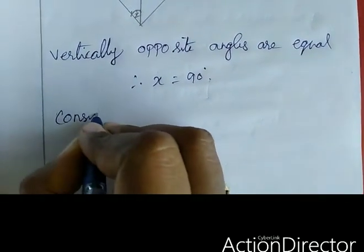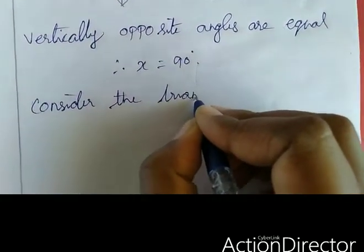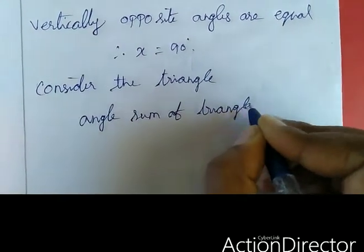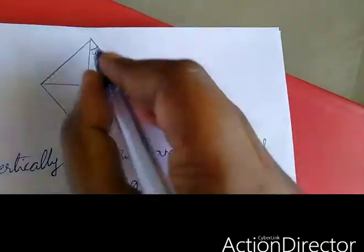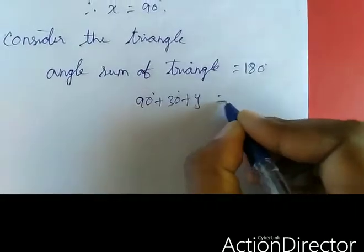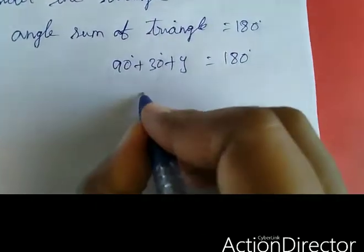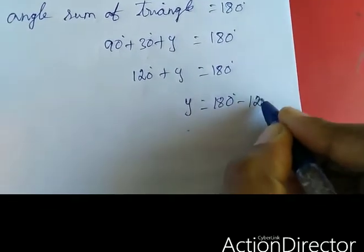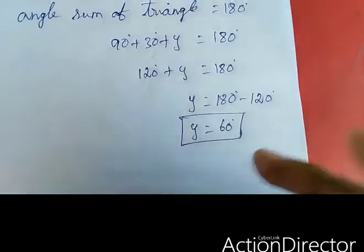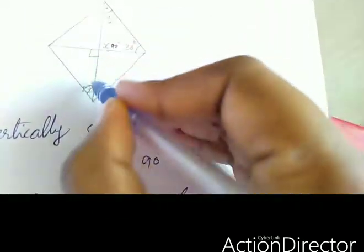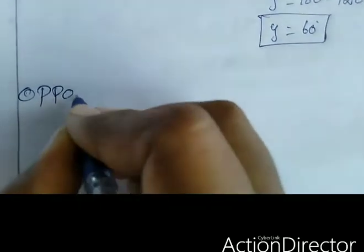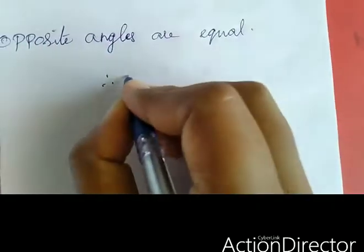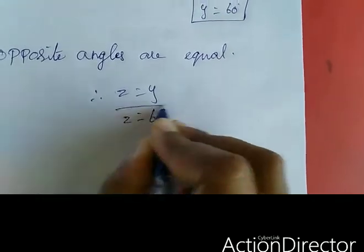If you add 90 plus 30, that is 120, plus Y equal to 180. So Y equal to 180 minus 120, that is Y equal to 60 degrees. Next, opposite angles are equal, so Y equal to Z. Therefore Z equal to Y, which is 60 degrees.